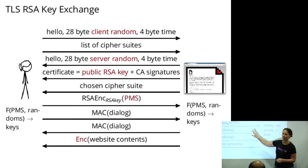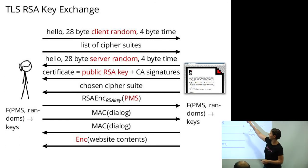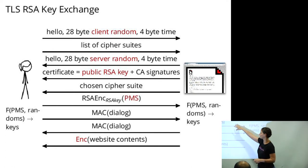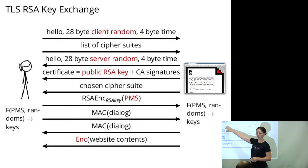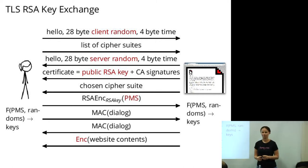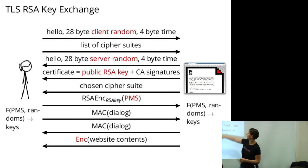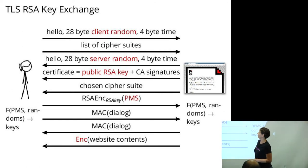I've put in red all of the things in this TLS transmission that should be random: the client random, the server random, the RSA key should be randomly generated, the pre-master secret should be random, the RSA encryption is randomized, and the encryption itself should be randomized if we're using random IVs as we should. We have a number of different things that should be random — some generated by the client, some by the server.